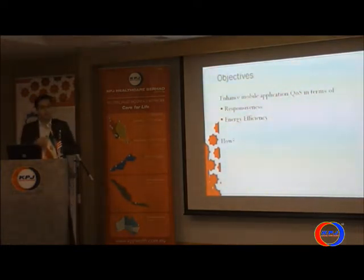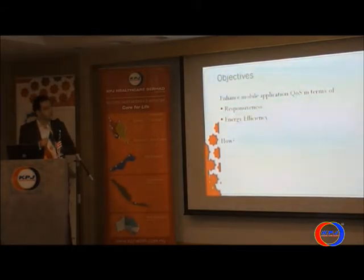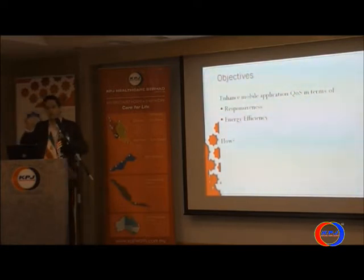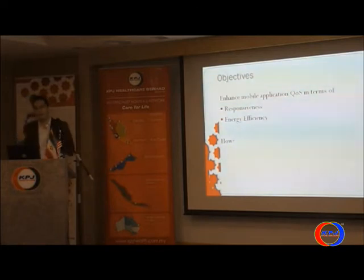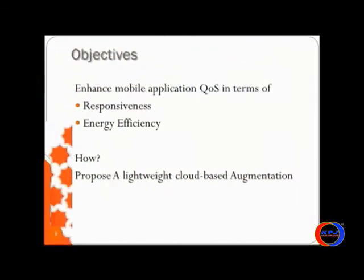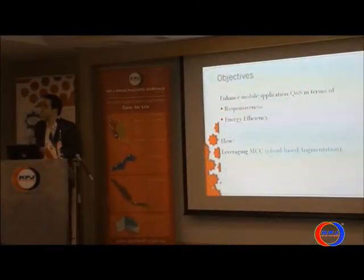What are the objectives of people in this sort of research? We are trying to improve the quality of service of mobile applications from two perspectives: responsiveness and energy efficiency. When you touch your mobile device, you want to immediately get the result. If it takes two minutes to reply, you will throw your device in the dustbin. The same applies for energy efficiency — if one application drains your battery in 10 minutes, you won't like it. To solve this, we are leveraging cloud resources for mobile computing — it is called mobile cloud computing — performing cloud-based augmentation to solve the problem.